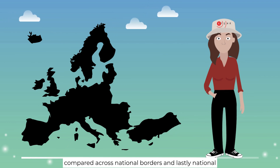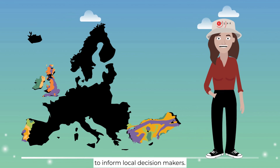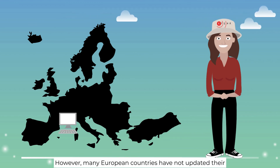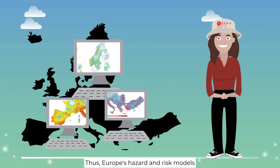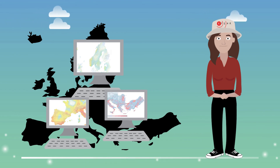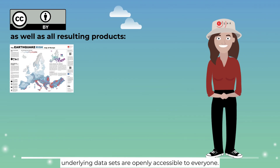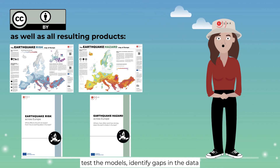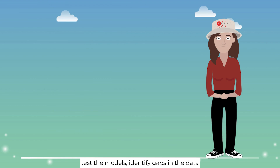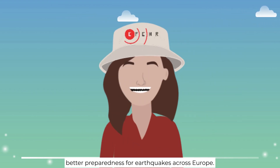And lastly, national models, when available, are always best suited to inform local decision makers. However, many European countries have not updated their seismic hazard and risk models in many years. Thus, Europe's hazard and risk models can help as a first step. This is further facilitated by the fact that all underlying datasets are openly accessible to everyone. Such an open data policy enables others to test the models, identify gaps in the data, and improve them for future models — for better preparedness for earthquakes across Europe.